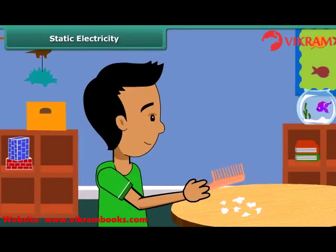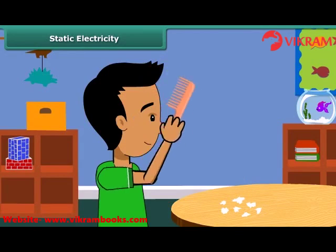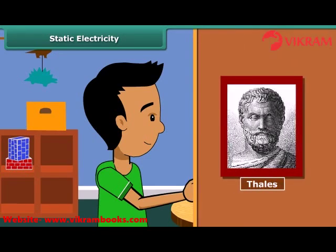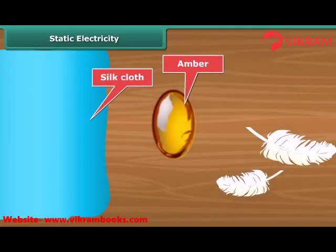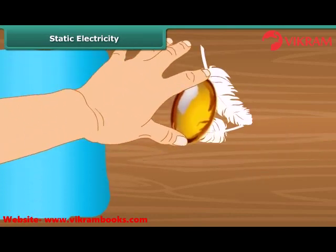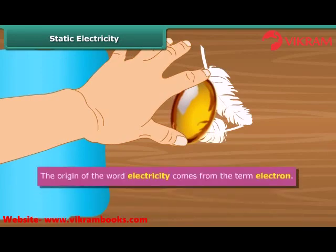When we comb our hair with a plastic comb and take it near small pieces of paper, the paper pieces are attracted toward the comb. We then say that the comb is charged with electricity. This was first noticed by a Greek man named Thales over 2500 years ago. Thales found that amber attracted tiny feathers after it was rubbed with silk cloth. This was due to static electricity. The origin of the word electricity comes from the term electron.